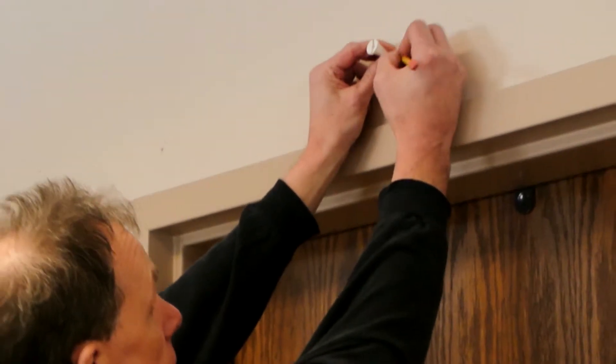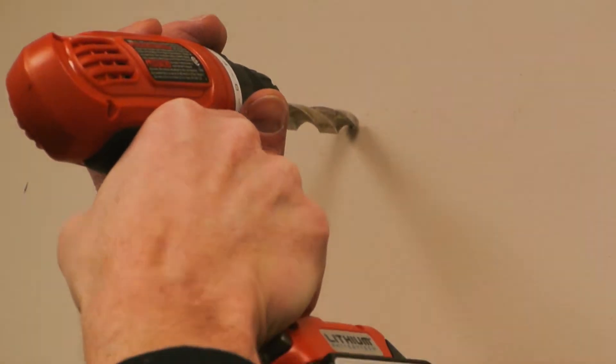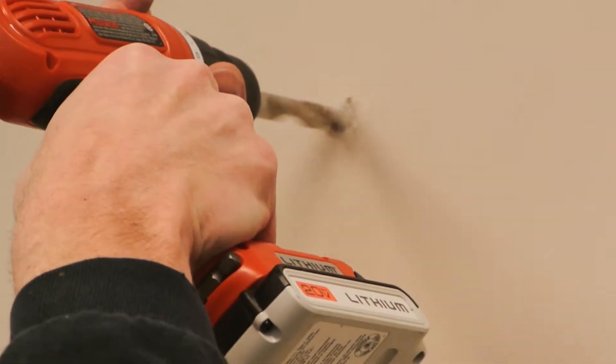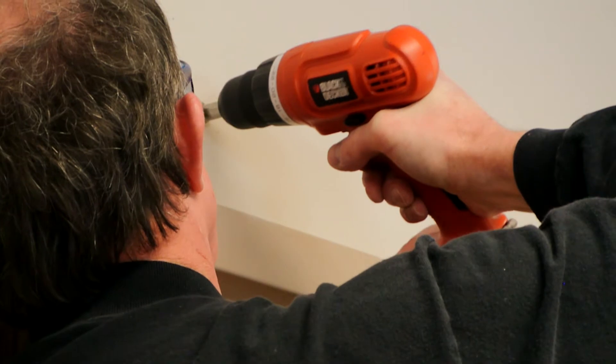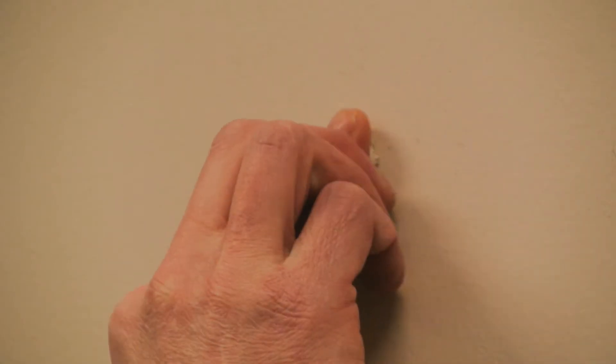We will start by measuring where the fiber feed plug will be installed. Use the appropriate drill bit size and drill your hole for the fiber feed plug. Insert the fiber feed plug to be flush against the wall.